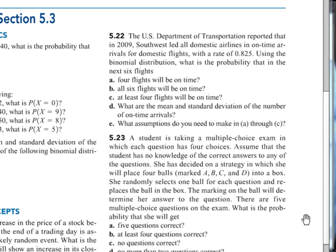Alright, in this video we're going to go over an example of the binomial distribution. We're going to be using example 5.22 in the book. This is on page 196.